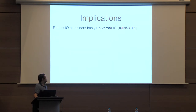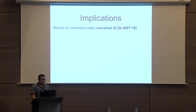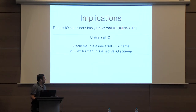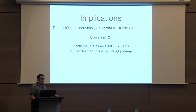The robust combiner is useful because it implies universal IO, as also observed in our previous work. A universal IO is a fixed scheme such that if there exists IO, then that scheme itself is a secure IO scheme.